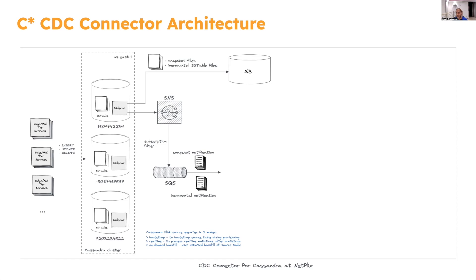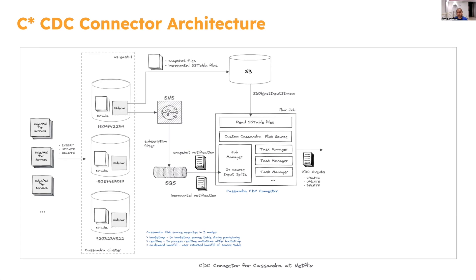This infrastructure has been running at Netflix for many years. The CDC source connector for Cassandra leverages this existing infrastructure by tapping into these SNS notifications and routing them to a dedicated queue provisioned for each connector deployment. The most important information in this notification is the S3 path to the SSTable files or snapshot manifest files, which the connector consumes to extract mutation information. There are two types of notifications: one for snapshot and one for incremental — snapshot notifications are used in bootstrap mode, and incremental notifications are used for real-time processing.